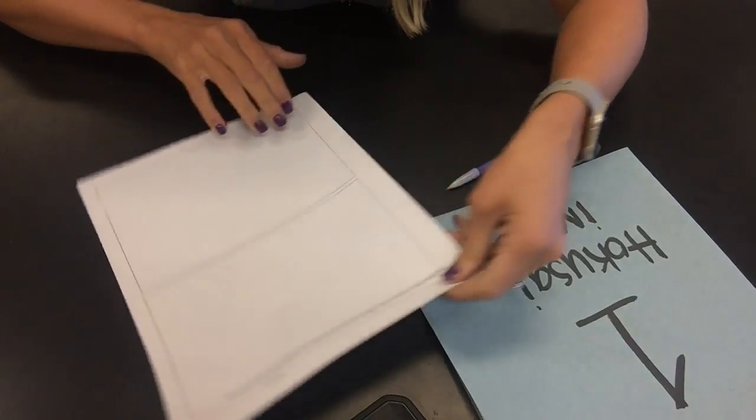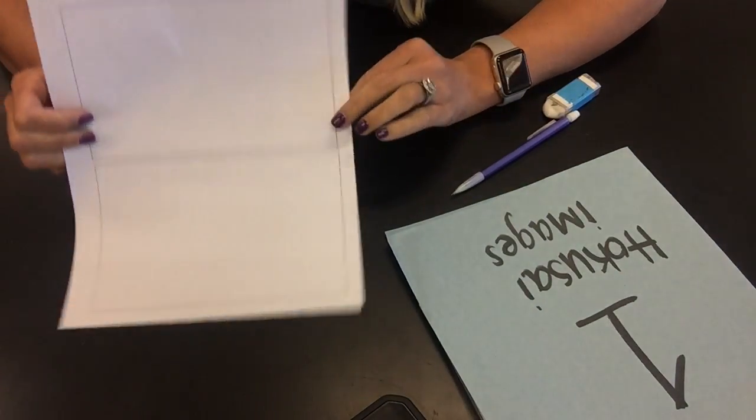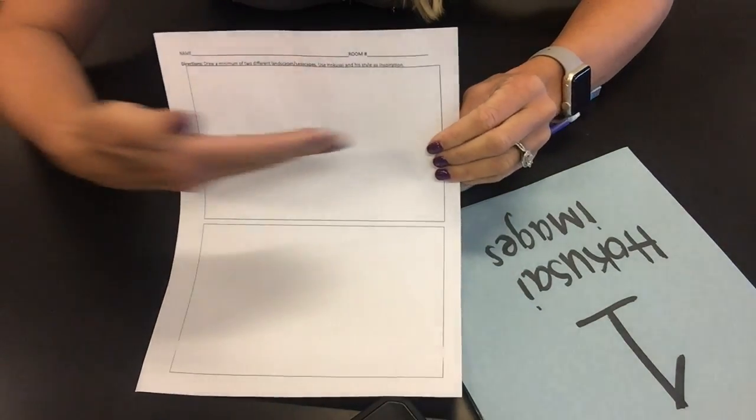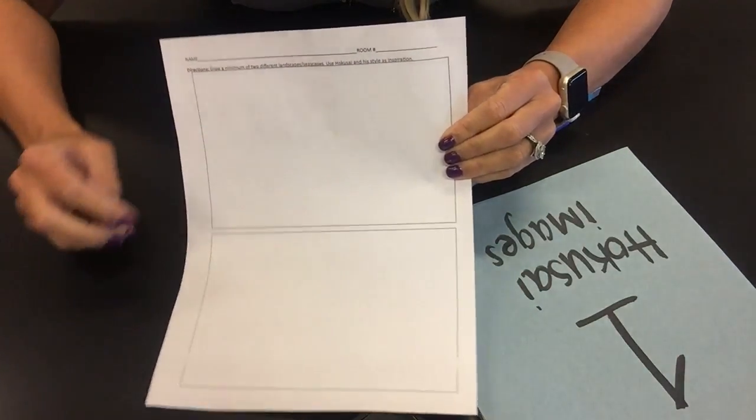All right, so for the Hokusai project, what you guys are going to do is start off with the sketch paper. There are four rectangles on here for you to sketch. You do want to make sure that the image is horizontal like this.